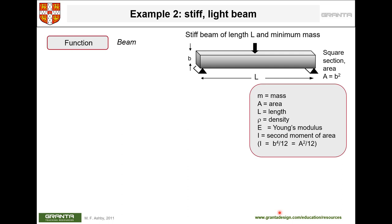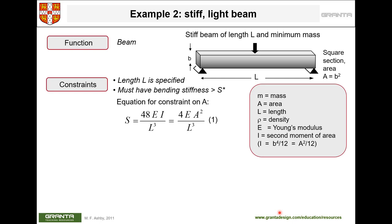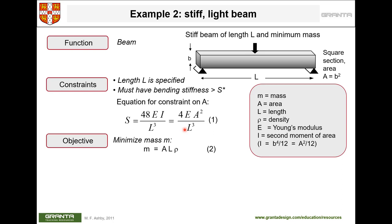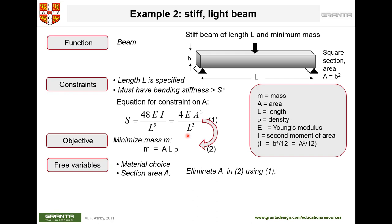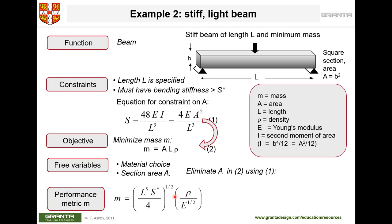In the beam example, unlike a rod, the beam can undergo transverse deformation under a lateral load F over length L. The constraint is that stiffness must be above a specific value — stiffness relates force to displacement. The objective is again to minimize mass. Area appears in both equations, so we use the same approach: eliminate A between the two equations to get the performance equation, isolating the material index.